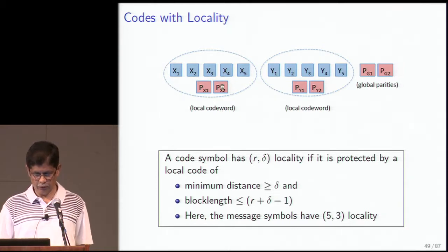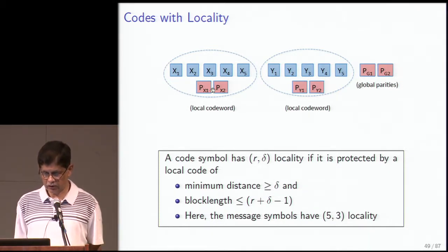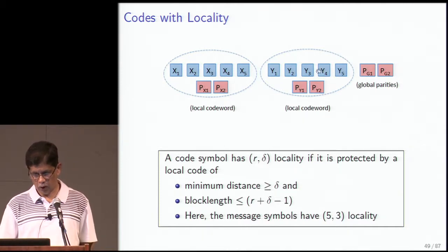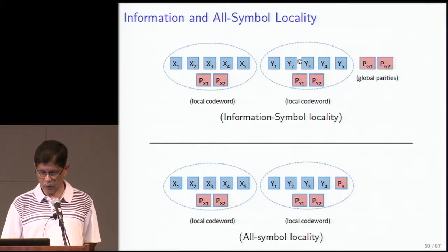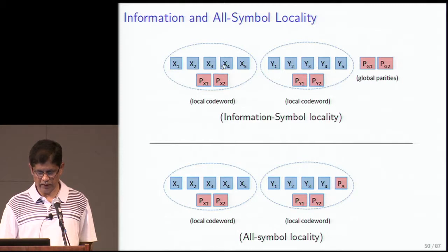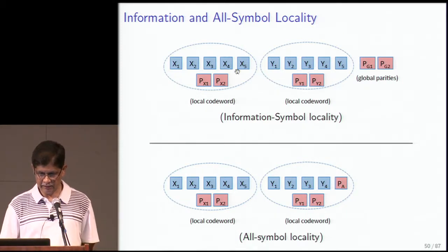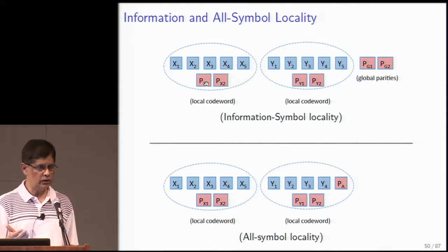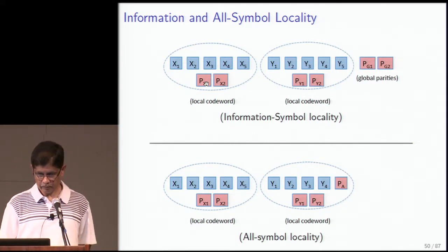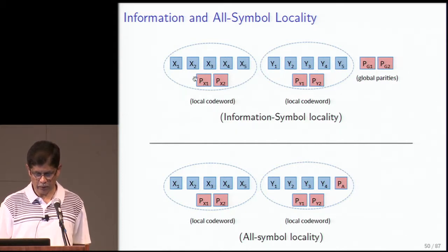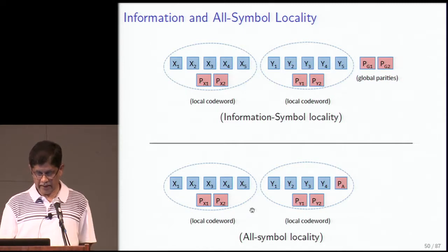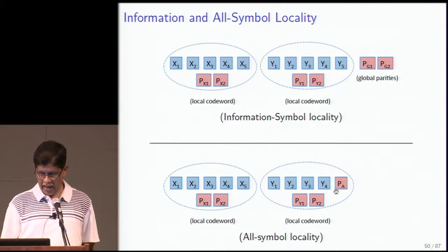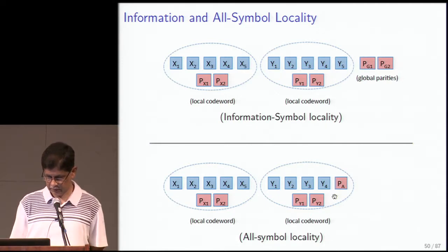A code symbol has (r, δ) locality if it is protected by a local code whose minimum distance is ≥ δ and whose block length is ≤ r + δ − 1. For example, the local code protecting x_1 is of length 7 with minimum distance at least 3. One distinguishes between codes with locality only for message symbols versus all symbols. With information locality, if a particular symbol fails, you only call upon the local code — from a coding theory perspective, you're puncturing the code.